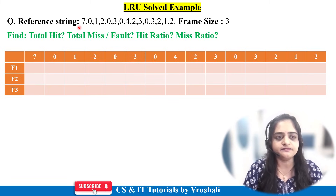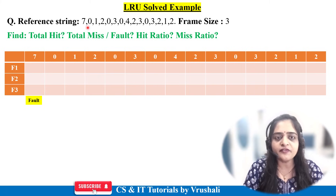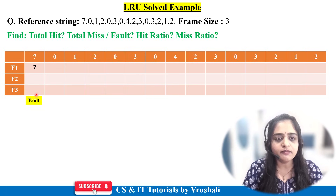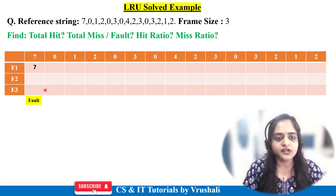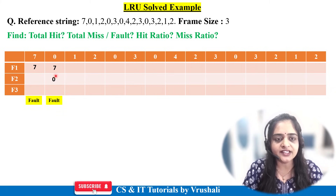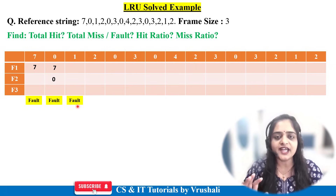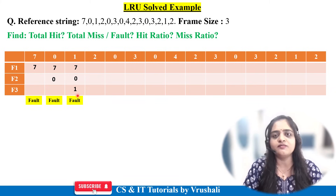Now solve the example step by step. First, the CPU demands page number 7. Check if 7 is present in memory — no, so a page fault occurs. The operating system fetches page number 7 from secondary memory and loads it into main memory at frame 1. Next is page number 0 — not present, so again a page fault occurs; keep page 7 and add page 0. Next is page number 1 — not present, again a page fault; keep pages 7 and 0, and add page 1 for execution.